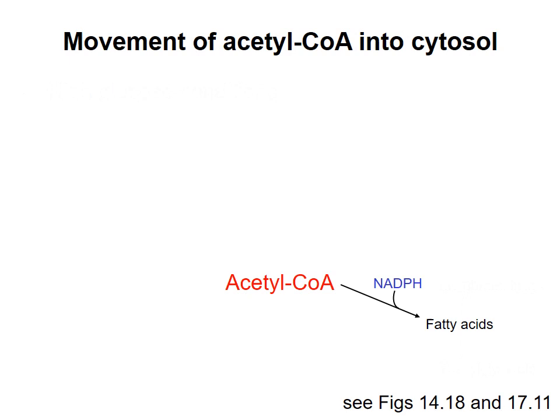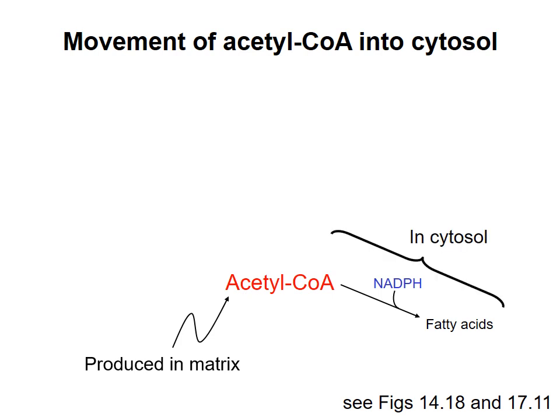Under high glucose conditions, most of the acetyl-CoA in the cell will come from pyruvate, one of the products of glycolysis. Recall that pyruvate decarboxylation to produce acetyl-CoA occurs in the mitochondrial matrix. However, synthesis of fatty acids occurs in the cytosol to separate it from beta-oxidation of fatty acids. Therefore, we need a way to move acetyl-CoA from the matrix into the cytosol.